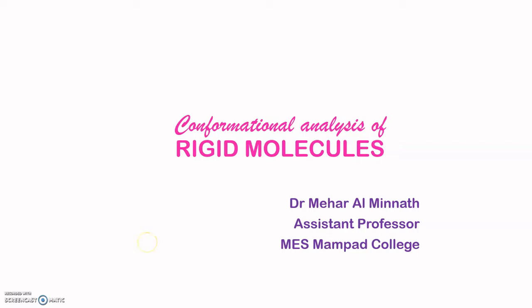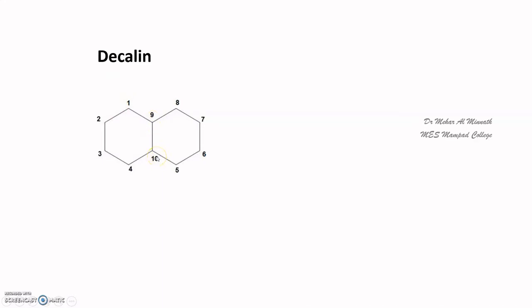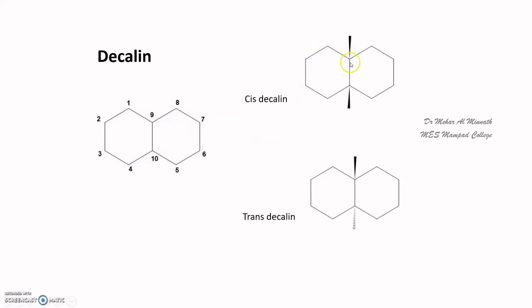One of the most extensively studied rigid molecules in this class is decalin. Decalin is a fused ring system having two cyclohexane rings fused together. It is numbered such that the fused carbons are numbered 9 and 10, with one through four on one ring and five onward on the next. There are two types of decalin: cis-decalin and trans-decalin, depending on the orientation of the hydrogens on carbons 9 and 10 at the fused positions.